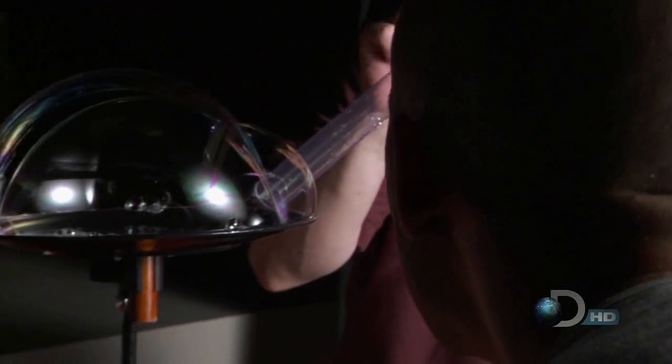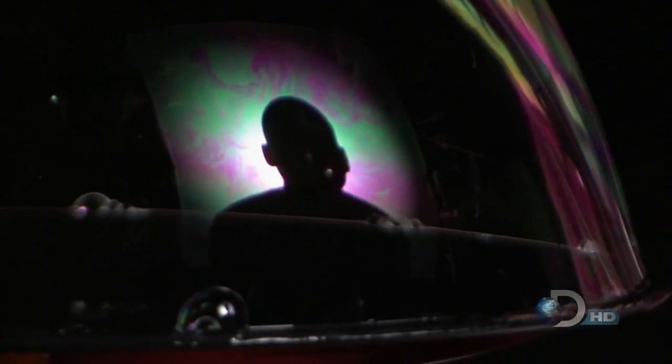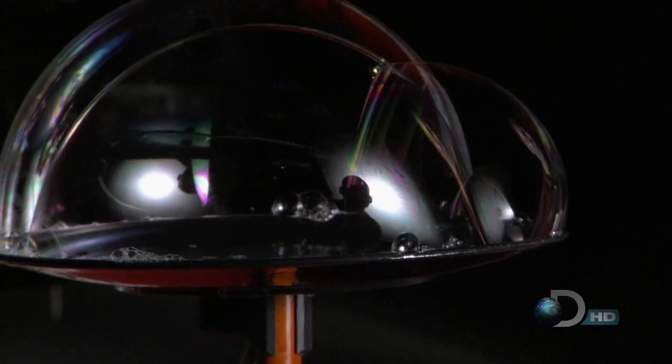Law number one, they act like a prism reflecting the basic colors of the universe. White light coming in is actually composed of all the colors in the rainbow. And based on the thickness of the film, all the different colors refract off in a different way. And so just like a prism, we get the whole spectrum in every bubble.